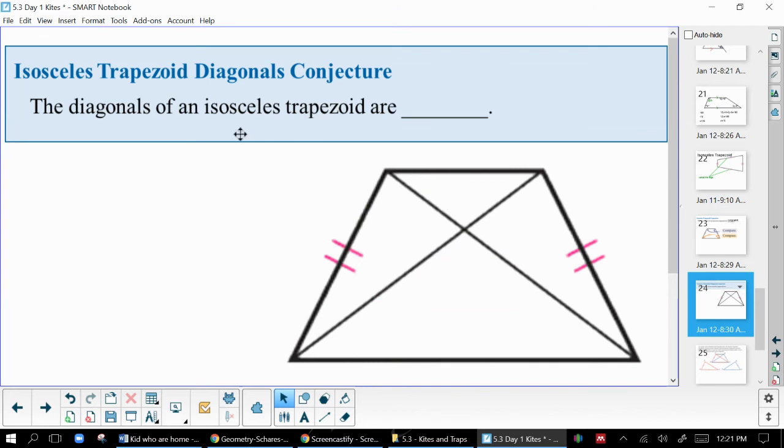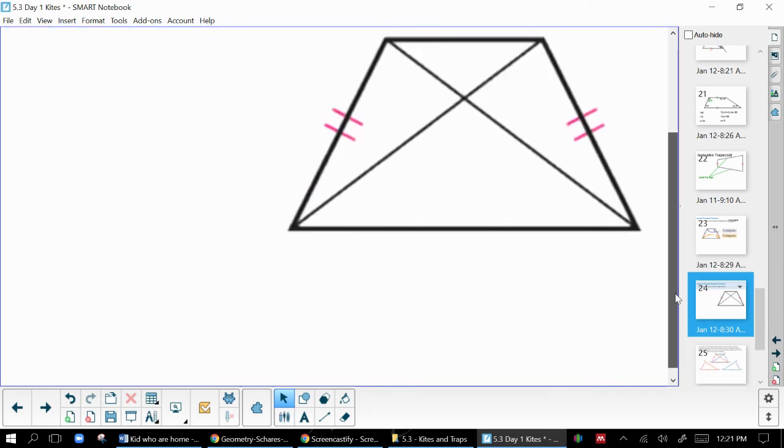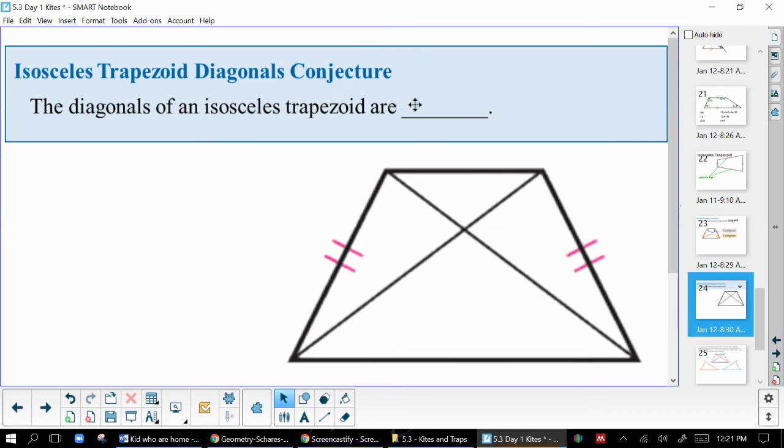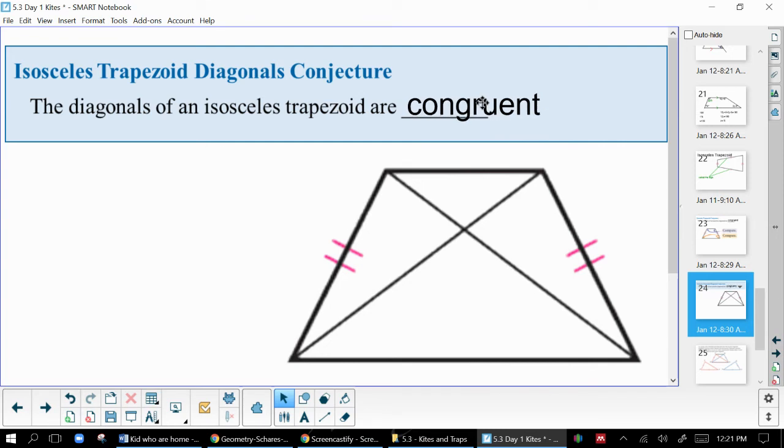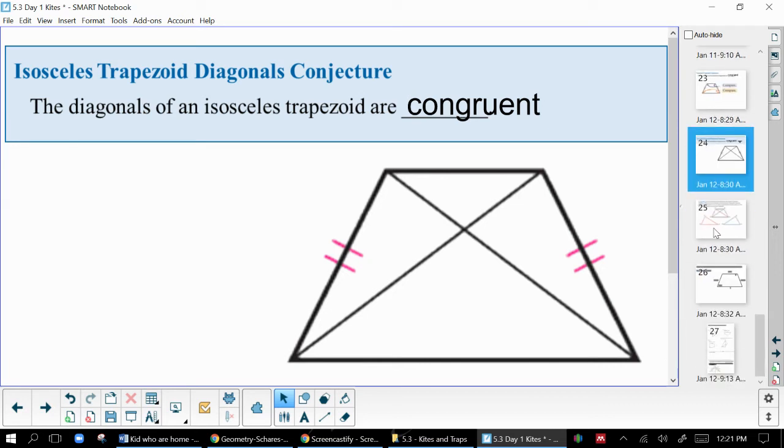Second thing here are the diagonals of an isosceles trapezoid. If I were to connect that line to that line or that point to that point, what would be true about those diagonals? They are also congruent. This is only true for isosceles trapezoids. If it's not isosceles, well, then it just doesn't work.